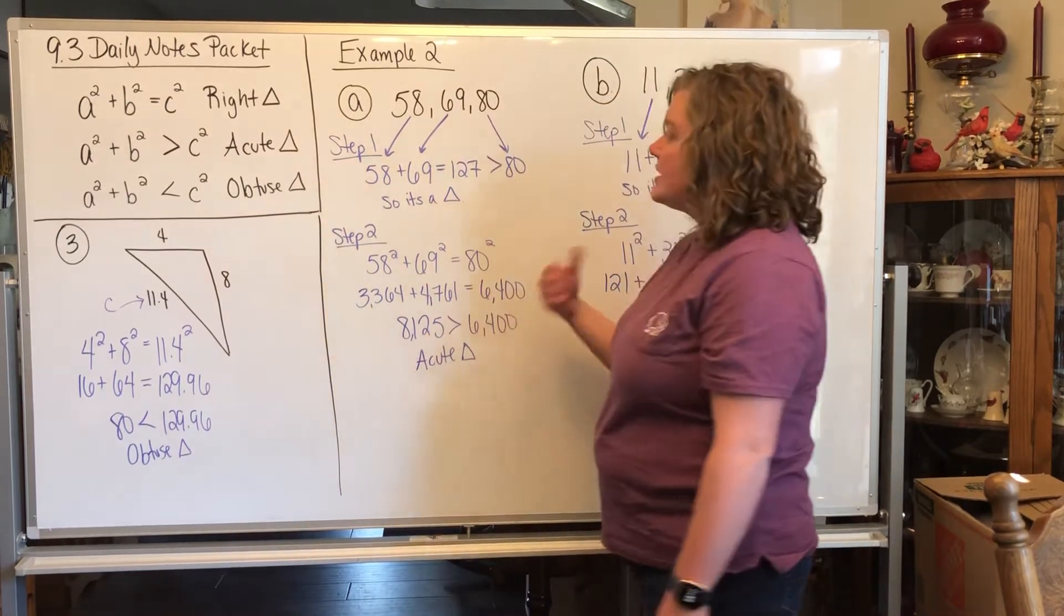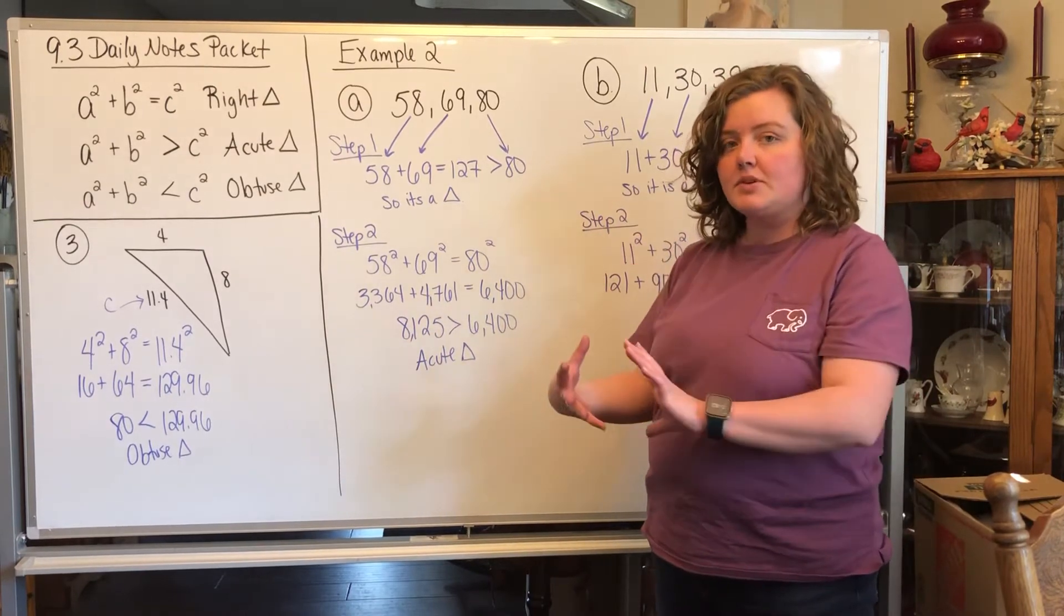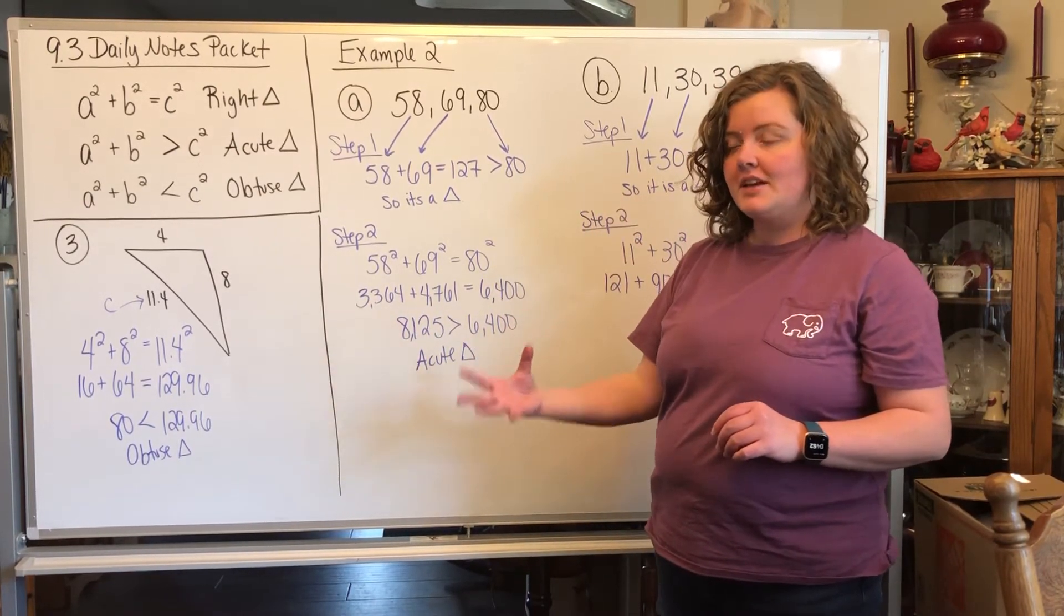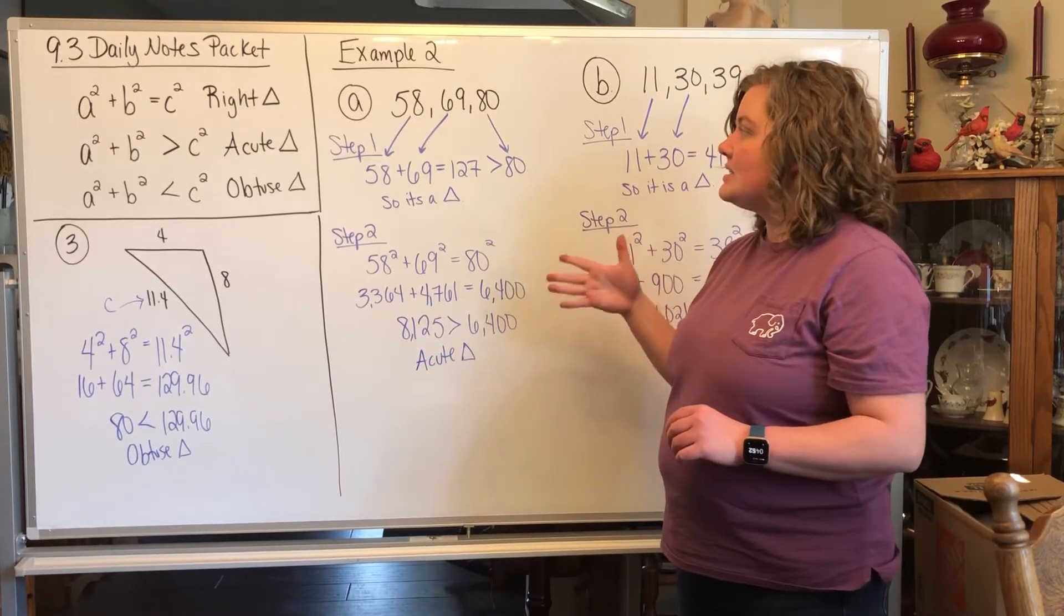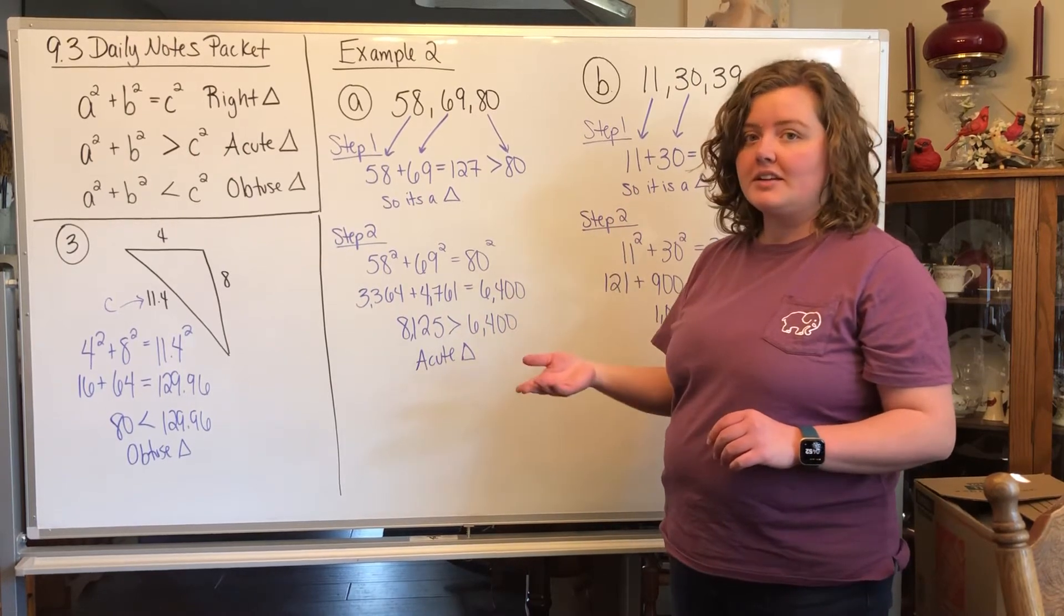All right, so the second part of page 2, we have example 2. What they want you to do is they gave you some numbers, and they want you to tell them if it is a triangle first, and then what type of triangle it is. So the way to tell if something's a triangle when you have three numbers is you use the triangle inequality theorem.